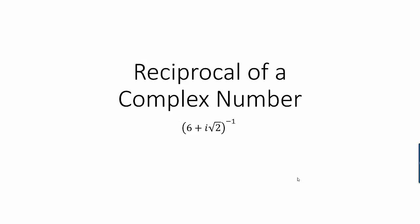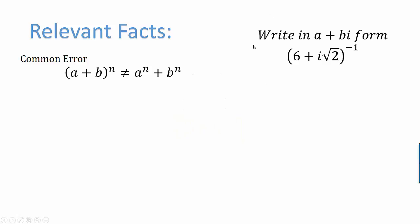Hi, I'm Ms. Hearn. Let's get started. In this video we're going to find the reciprocal of a complex number. In particular, we're going to raise 6 plus i root 2 to the negative 1 power, or in other words take its reciprocal. Our goal is to write 6 plus i root 2 to the negative 1 in a plus bi form, the standard form of a complex number.